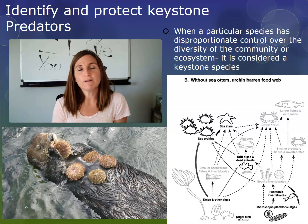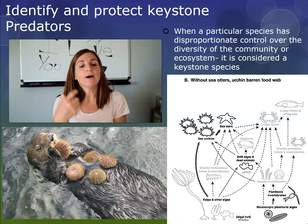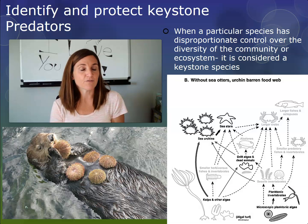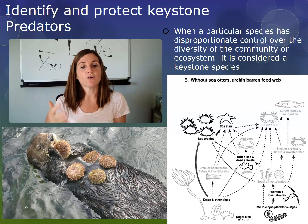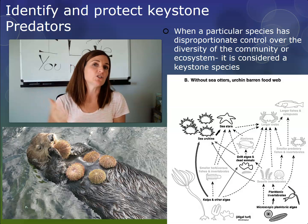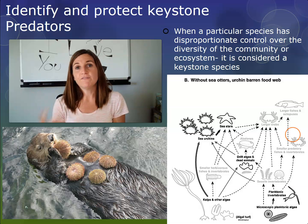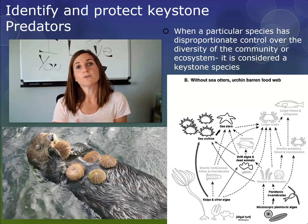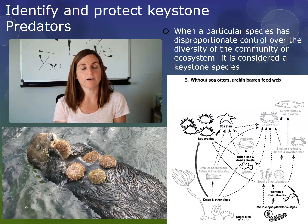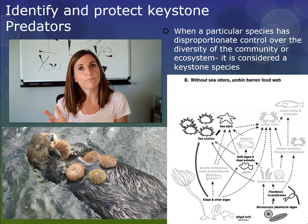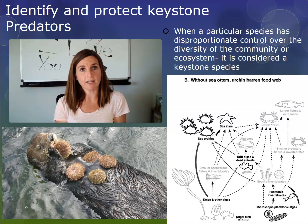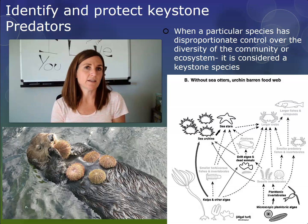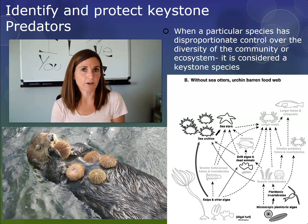Sea otters are cute, but people like to hunt them for their pelt, and they also get injured in boating accidents and fishing gear. Sea otters are incredibly important but also a fragile member of an ecosystem — that's an example of a keystone predator. When you're trying to maintain species diversity, one important thing to identify and look for is a keystone predator.